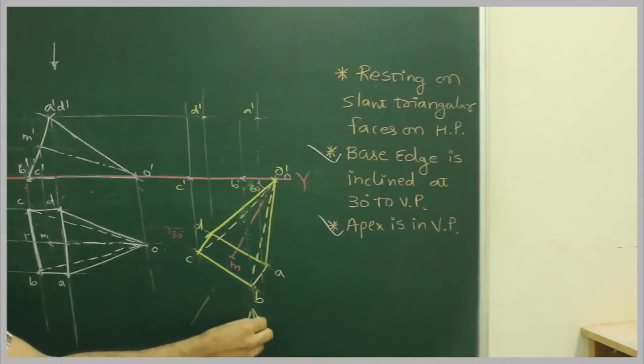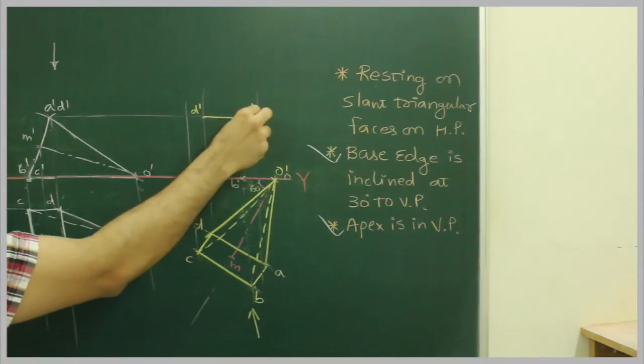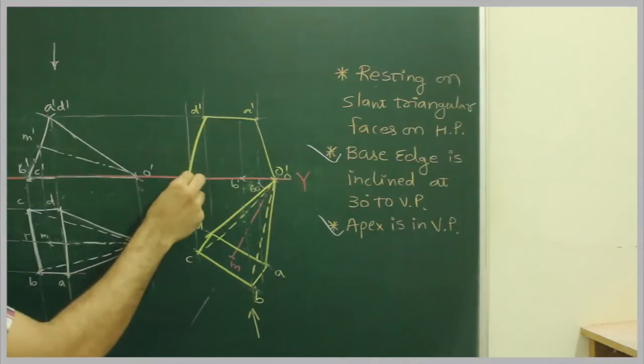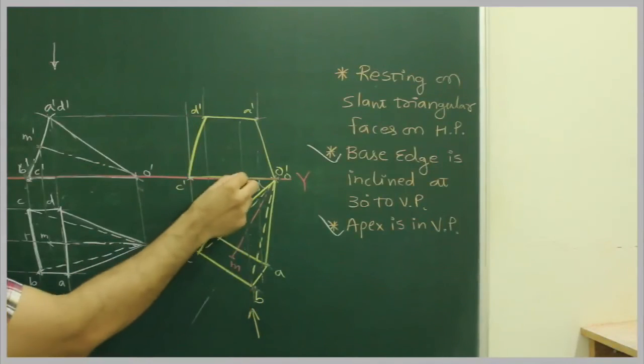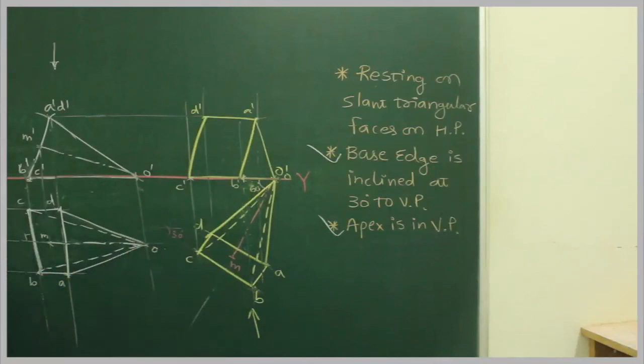Now what we observe is seen from top. This is extreme corner which is down. Point B is nearer to the observer, so B' to A' is dark.